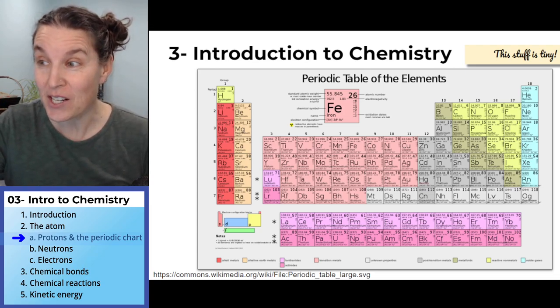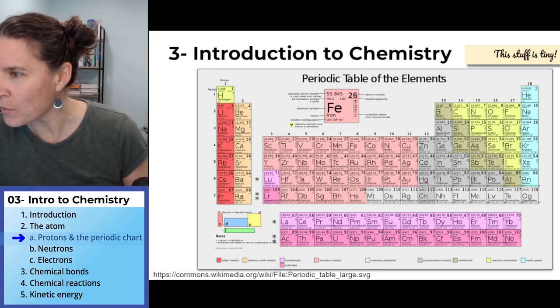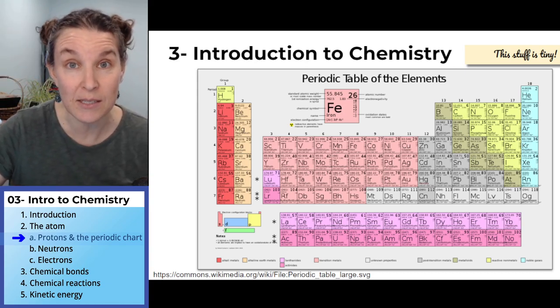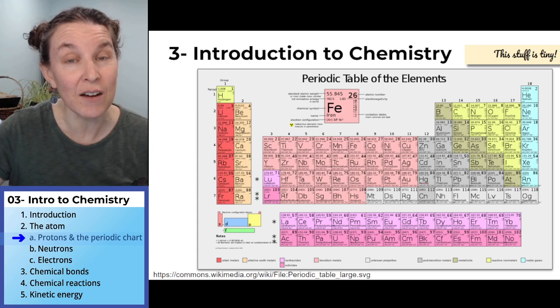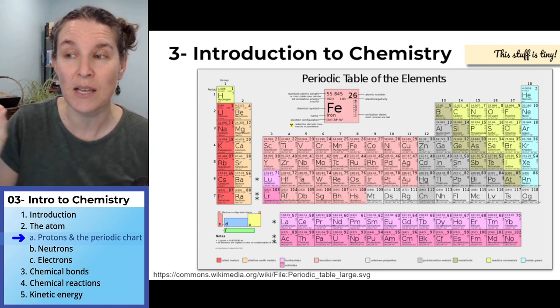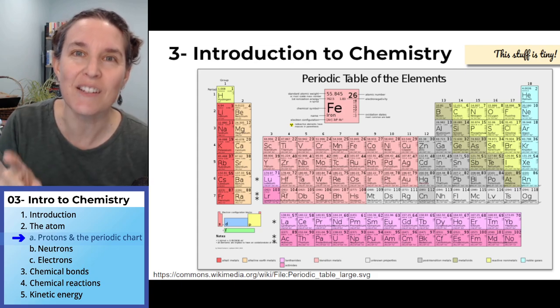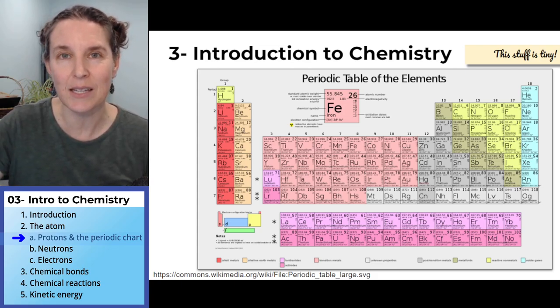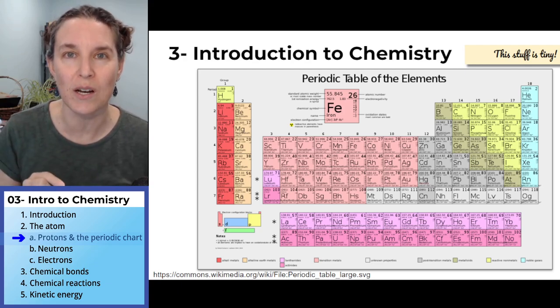If you look at our periodic chart, which has 118 different elements, different kinds of atoms, different flavors of atoms, the thing that's different about each one of those elements listed inside the boxes is the number of protons that it has.